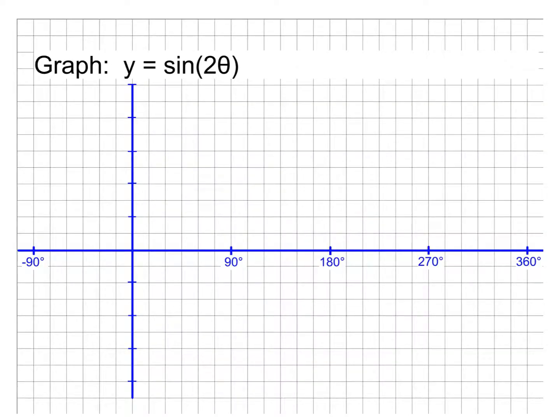So, for instance, what if it was 2? What if b was 2 here? That would mean that it would complete two cycles between the normal 0 and 360. That's how we get these formulas down here. Because I take whatever I normally completed in, so like 360 degrees, and I divide it by the number. Because if it's 2, I completed two cycles between 0 and 360. That means each cycle must be 180 degrees wide.